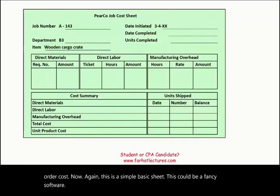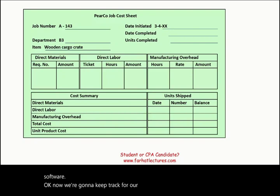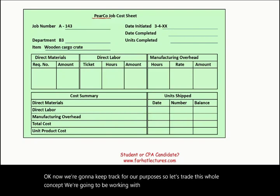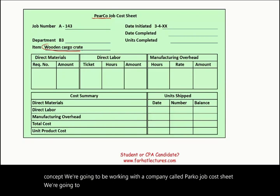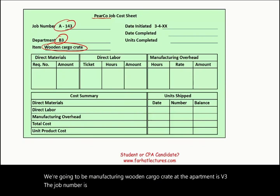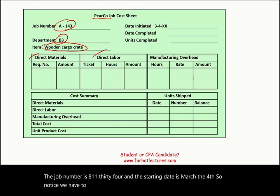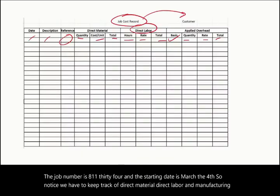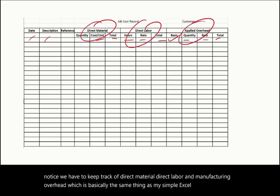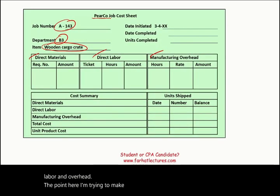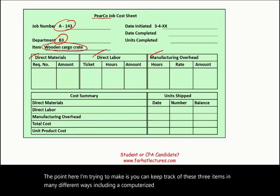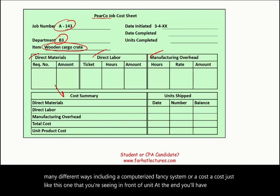For our purposes to illustrate this concept, we'll work with a company called Pearco. We are manufacturing a wooden cargo crate, in department B3, job number A134, starting March 4th. Notice we have to keep track of direct material, direct labor, and manufacturing overhead — the same three components as our simple Excel sheet. At the end, you'll have a cost summary for each product.